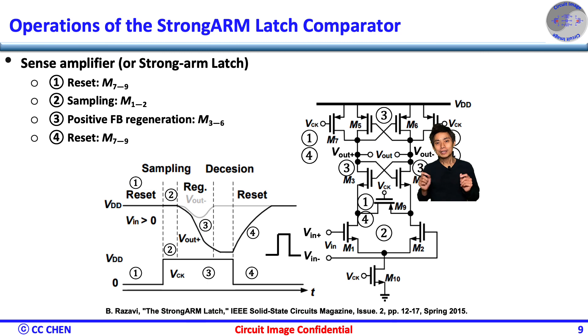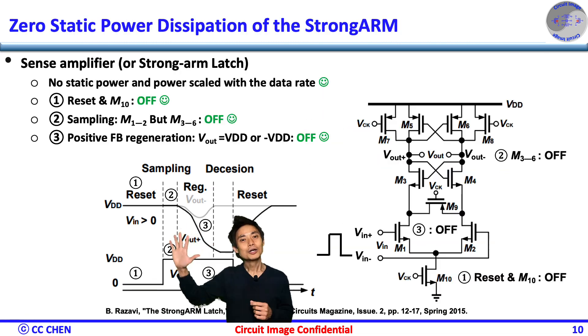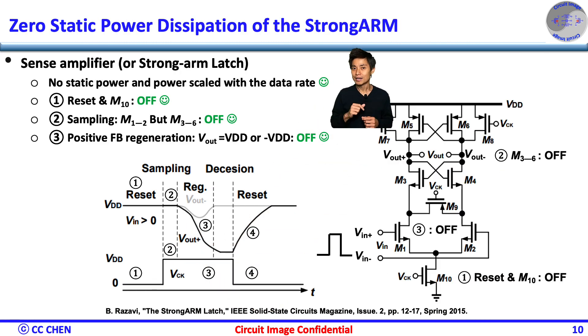Alright, we already understand the topology and operation of the strong-arm latch comparator. Let's think about its advantage for five seconds and see if that means what you want in most of the circuit applications. Great, first and foremost, a strong-arm latch comparator consumes zero static power dissipation. But why?